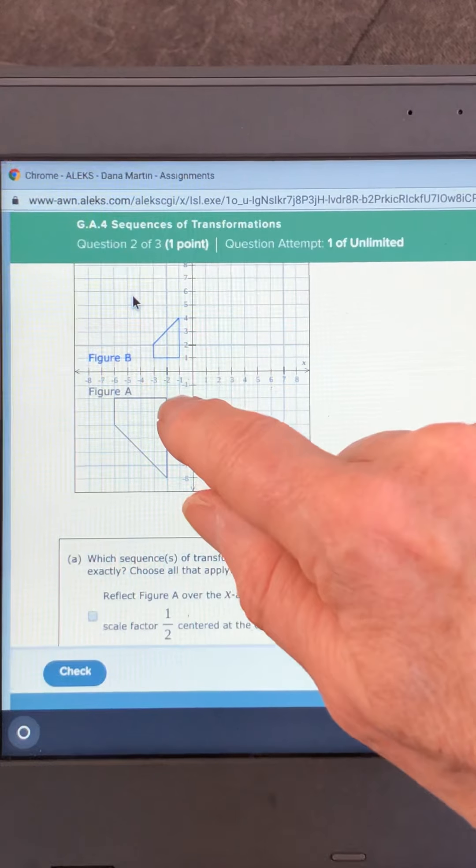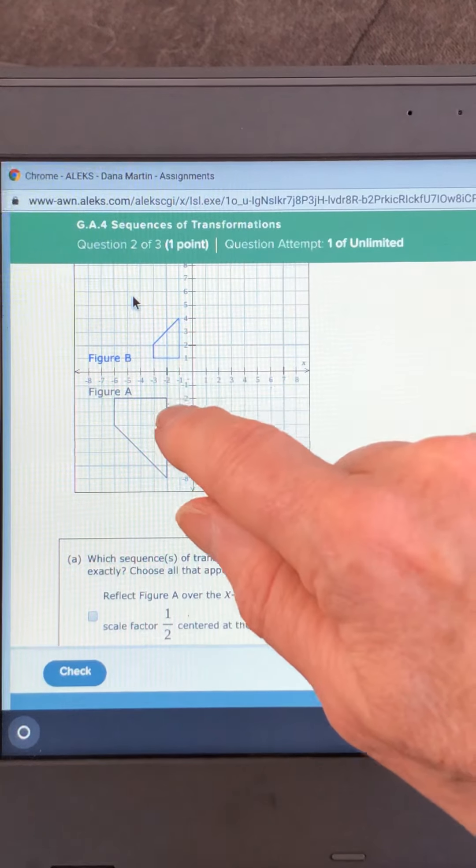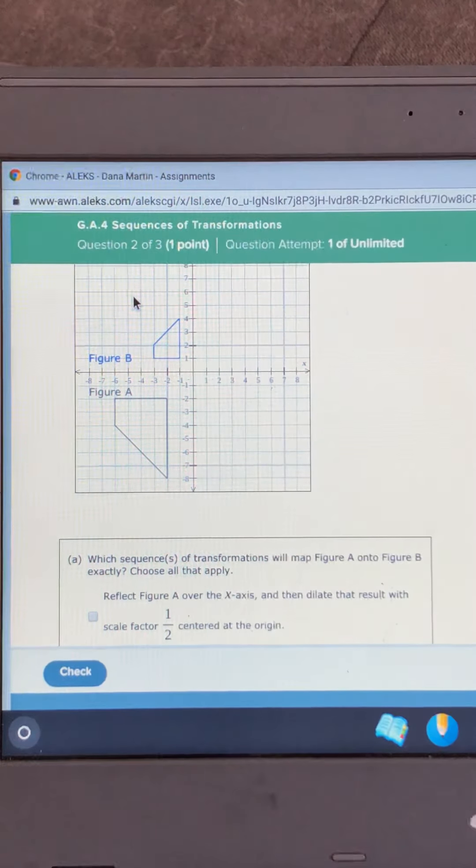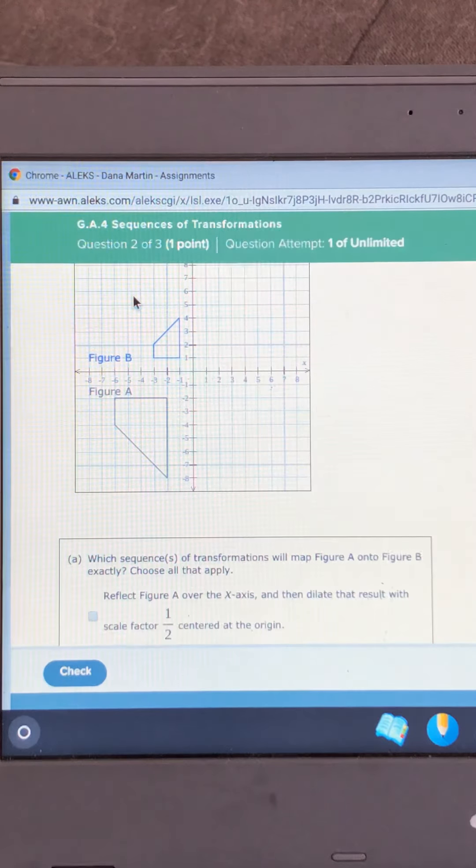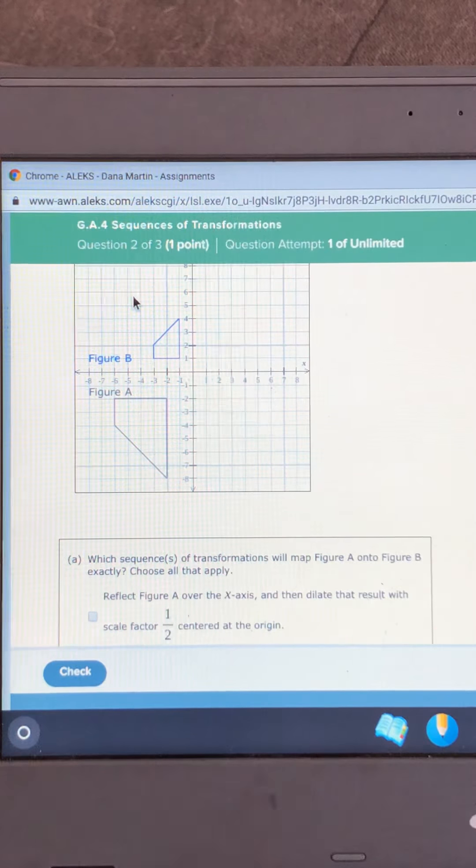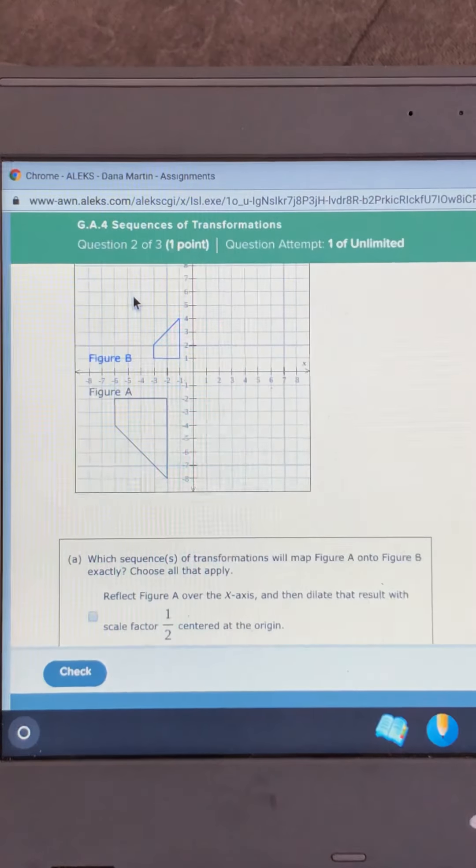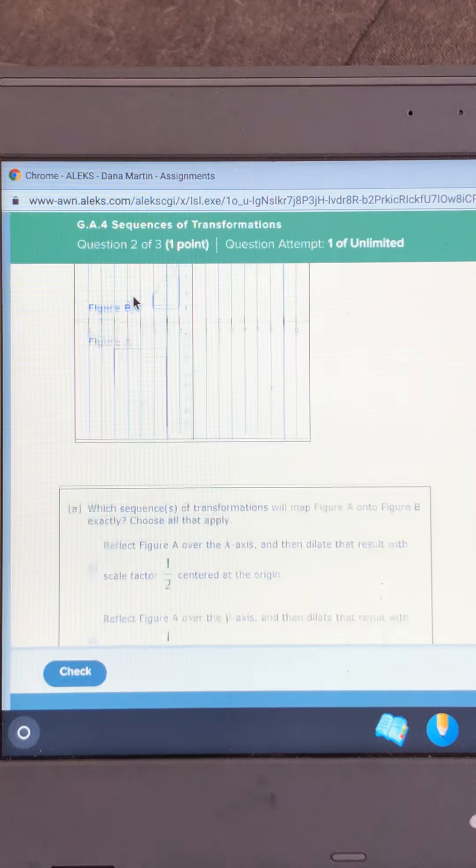So it went down half in terms of its ordered pair. Remember we can multiply the ordered pair by the scale factor to get the new ordered pair. So now we do know that is one half.